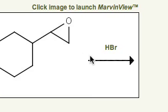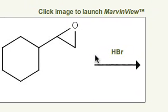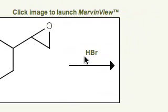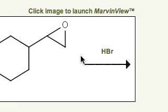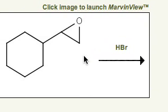Well when we treat an epoxide such as the one shown here with one equivalent of hydrogen bromide, we have both the acid and the nucleophile all contained in one lovely little package here in the form of hydrobromic acid.